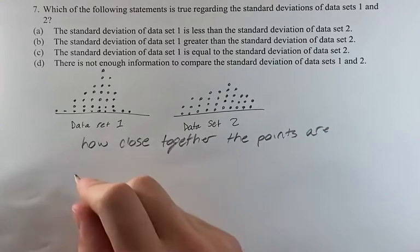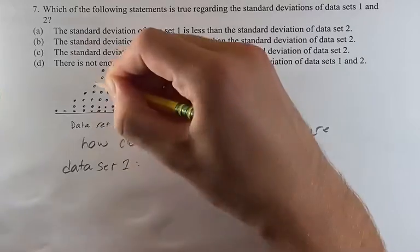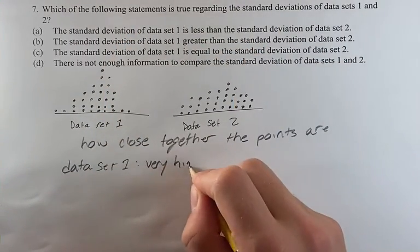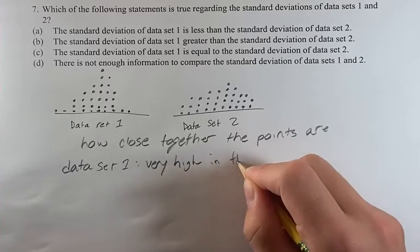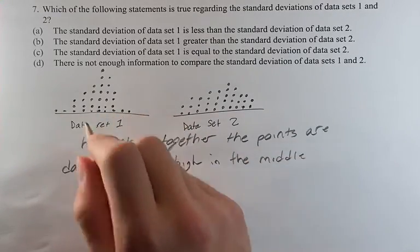All right, so we're going to look at it visually. Dataset 1 has a very high in the middle, basically nothing out at the ends.